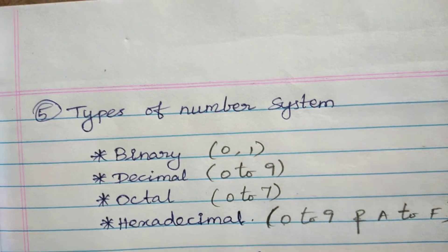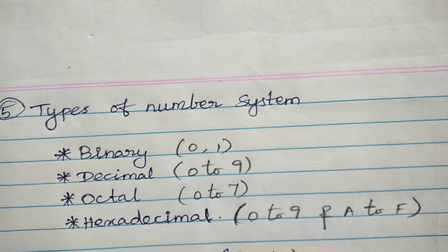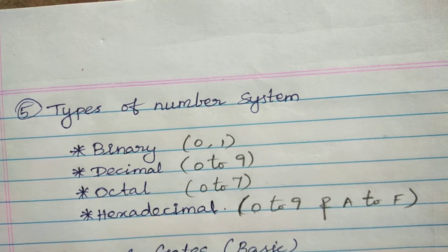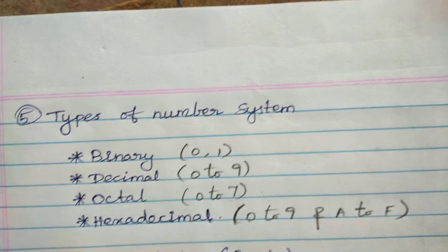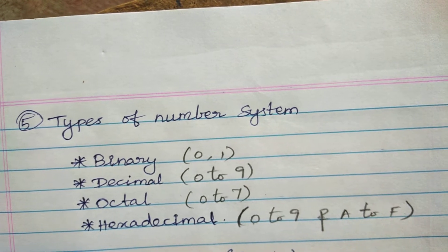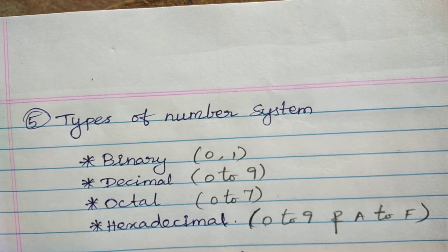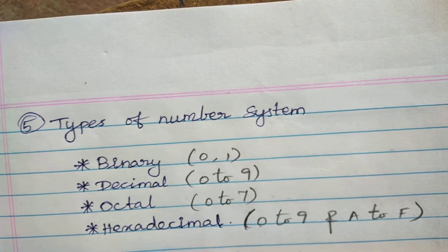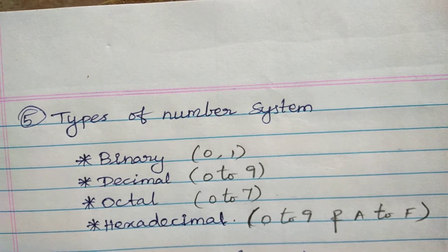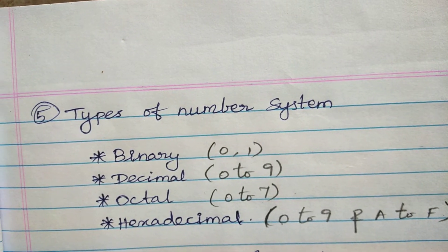Binary, decimal, octal, and hexadecimal — these are the radix values. Binary has zeros and ones alone. Decimal numbers are 0 to 9 only — 10 digits. Octal is 0 to 7. Hexadecimal has 16 digits, so 0 to 9 values correspond to A to F values. These are the hexadecimal digits.